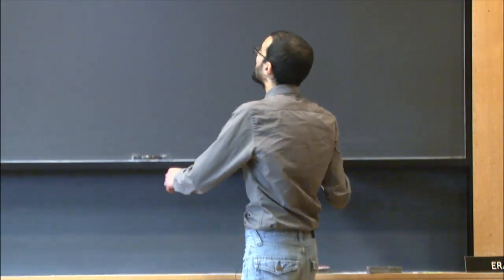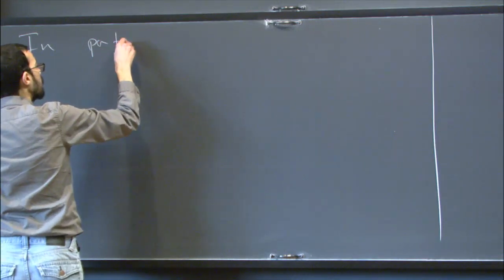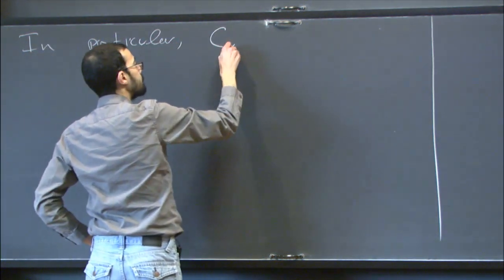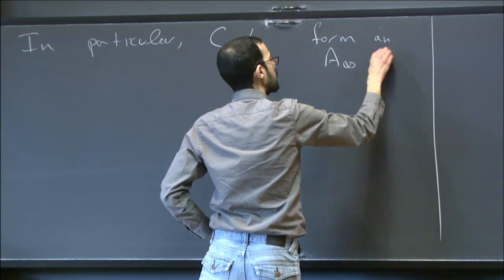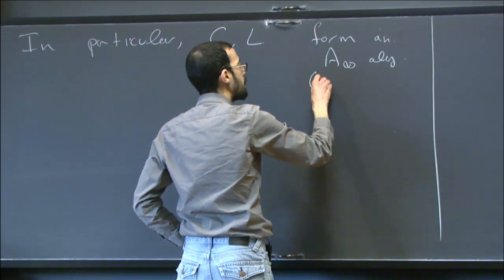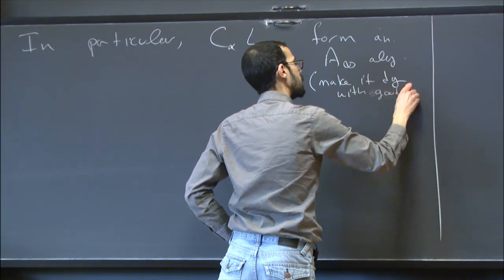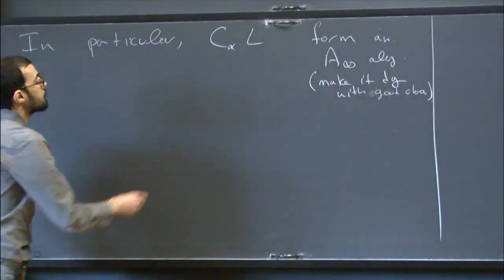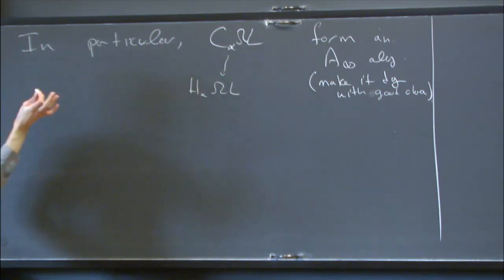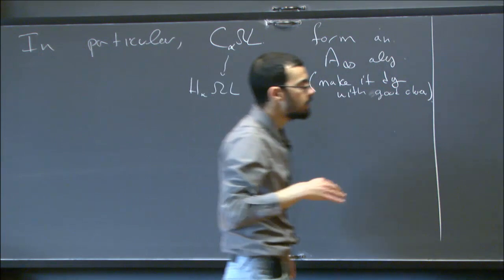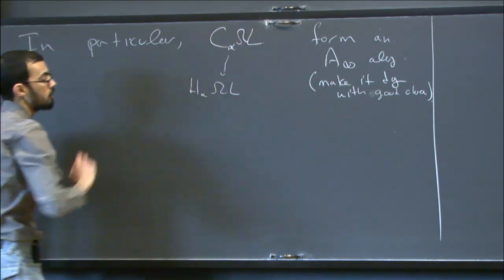The fact that it's an A-infinity space means not only is it homotopy associative, but we have the full data of higher coherences of the homotopies. Whenever you have such a space you can pass to homology or chains. In particular, chains on ΩL form an A-infinity algebra, though with careful choices you can actually make it into a differential graded algebra.